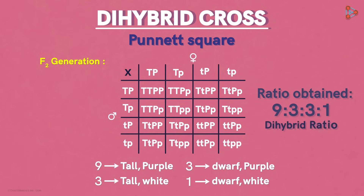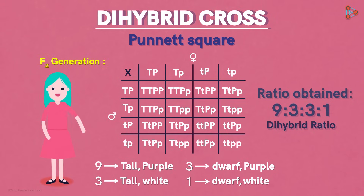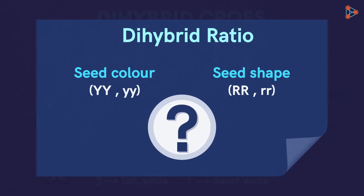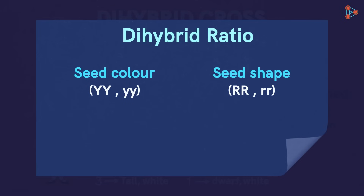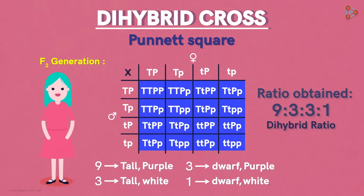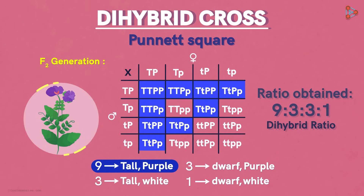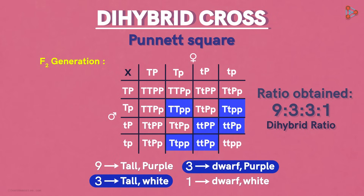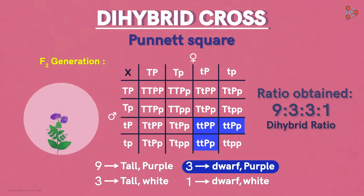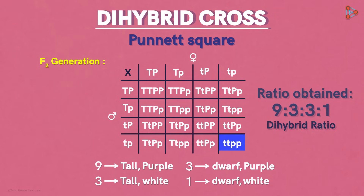This ratio is referred to as the dihybrid ratio. Whenever any two characters are randomly taken for a cross — say we take seed colour and seed shape — do we obtain the same ratio? Well, if the cross is carried out correctly, then we are bound to get 9 to 3 to 3 to 1 as the dihybrid ratio. So if there are sixteen plants obtained in the F2 generation, nine of them on average will express both dominant characters, like tall height and purple-coloured flowers. Six plants on average will express a blend of dominant and recessive characters — three expressing tall height and white flowers, and three showing dwarf height and purple flowers. Lastly, only one out of sixteen shows both recessive characters.